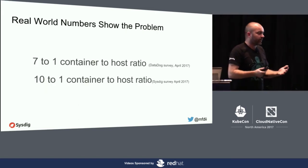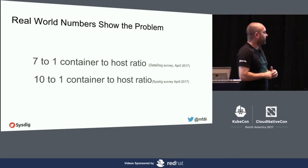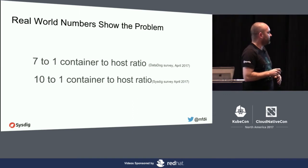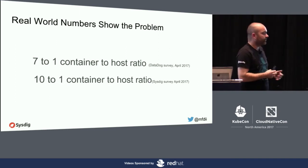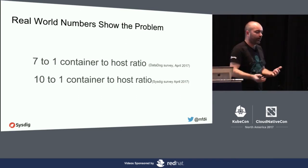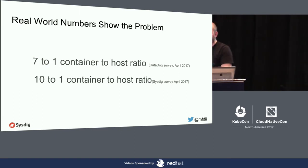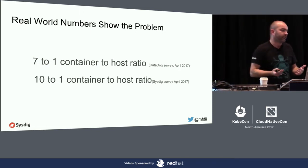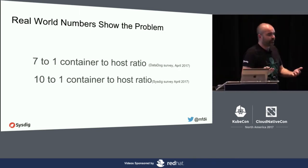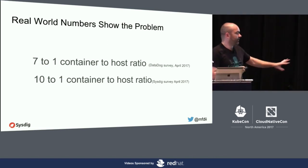If you look at real-world numbers on container usage, surveys show container-to-host ratios of about seven to ten containers per host. Why? Because we're treating containers as VMs and not taking advantage of all the resources on a system. And we're running containers on VMs, which may not be the best paradigm to get optimal resource usage.